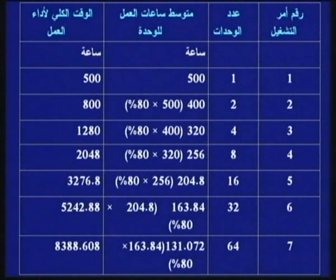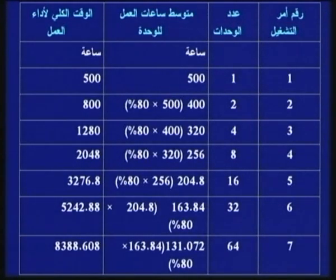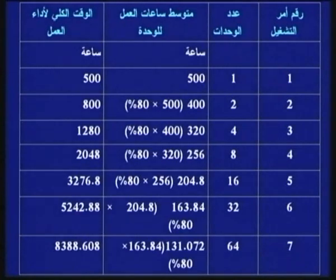لو أنتجت وحدة واحدة، الوقت الكلي = 1 × 500 = 500 ساعة. لو ضاعفنا الإنتاج وأنتجنا وحدتين، متوسط وقت الوحدة يقل بـ 20% ليصبح 80%: 500 × 80% = 400 ساعة. الوقت الكلي لأمر التشغيل رقم 2 = 2 × 400 = 800 ساعة.